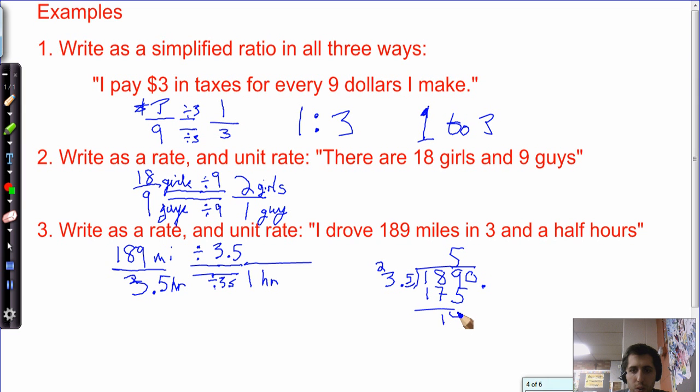How many times does 35 go into 140? Let's try 4. 4 times 5 is 20. Looks good. 4 times 3 is 12. Plus 2 is 14. Bring up my decimal just to be sure where it is. 54. I drove 54 miles in one hour. And that makes sense. 189 miles in 3 and a half hours. 54 sounds reasonable.